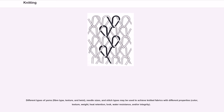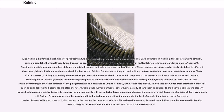Like weaving, knitting is a technique for producing a two-dimensional fabric made from a one-dimensional yarn or thread. In weaving, threads are always straight, running parallel either lengthwise — warp threads — or crosswise — weft threads.